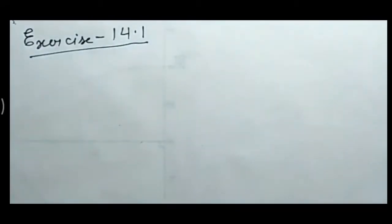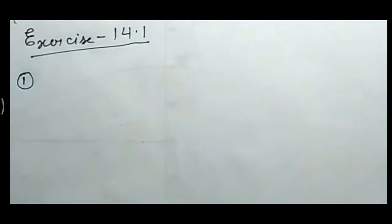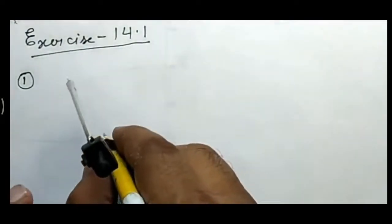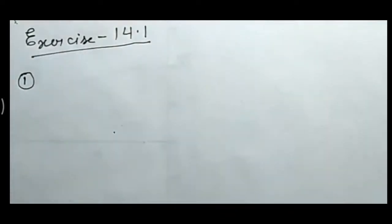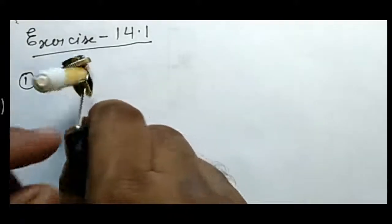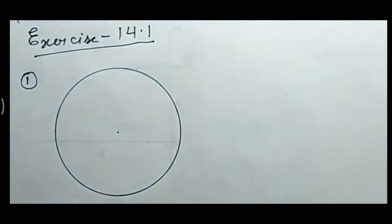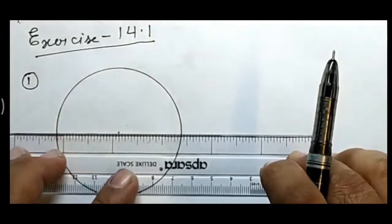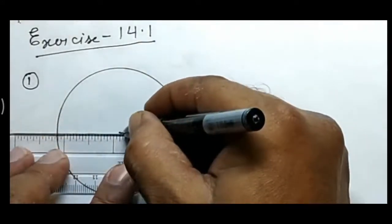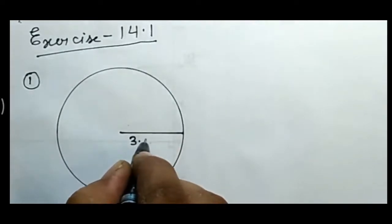I have taken 3.2 cm in the compass. Then, after taking 3.2 cm, you will mark a center first on the paper, put the needle of the compass on the center, and draw the circle. Then, draw a radius from the center to a point on the circle — this line is called the radius. Write the length: this will be 3.2 cm.